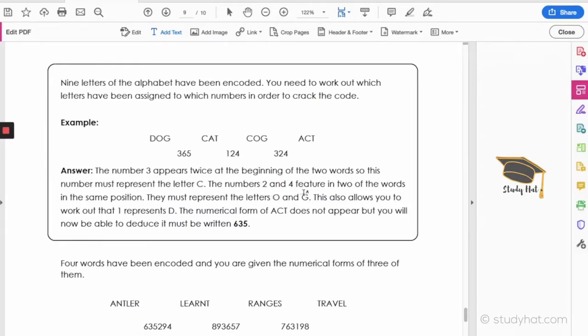The numbers two and four feature in two of the words in the same position, DOG and COG. They must represent the letters O and G, and this allows you to work out that one represents D. The numerical form of ACT does not appear, but you'll now be able to deduce it must be written 6, 3, 5.